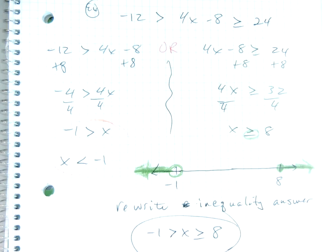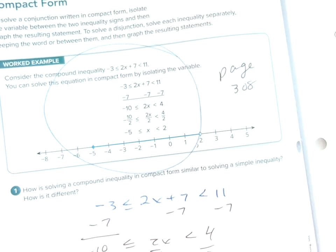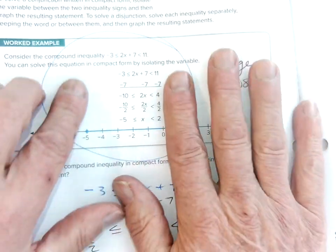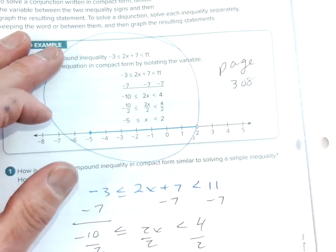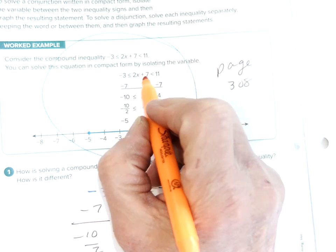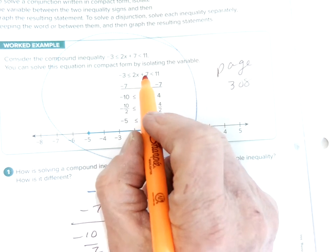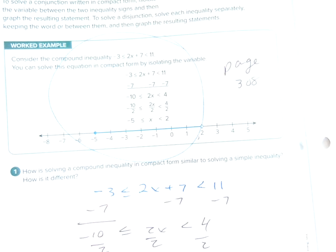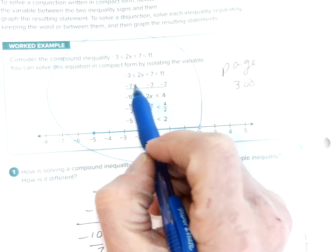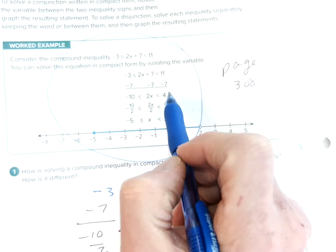Now in the book, the book does it a little bit differently. I don't know if this works for you. Some kids like to do it this way. They don't break it into two different equations. They just keep the two inequalities all the way through. And what you're going to do is solve it on both sides. So minus 7, I've got to get rid of the 7. So if I have to get rid of the 7, we went minus 7, we do it here and here.